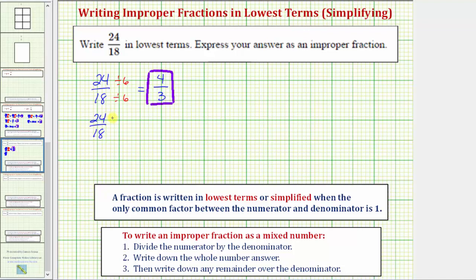If we divided the numerator and denominator by two, we'd have the equivalent fraction 12 over nine, because 24 divided by two is 12, and 18 divided by two is nine.